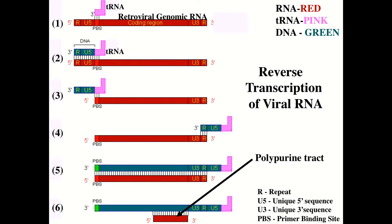In either case, this newly synthesized piece, still attached to its RNA primer, is moved down to the 3' end of the now somewhat shortened RNA genome. That now serves as a primer for reverse transcriptase activity again. Using that sequence as a primer, reverse transcriptase makes a DNA copy of the rest of the RNA genome all the way down through the primer binding site at the other side.